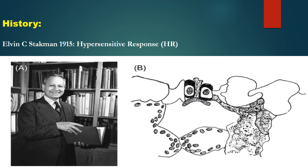The hypersensitive response or HR was first discovered in plants by Alvin S. Deckman in 1915 while working on cereal rust. He observed that those varieties which show HR are the resistant ones, and those varieties which are unable to show HR are the susceptible ones. So there is a correlation between resistance and hypersensitivity. More than 100 years have passed, but still this test is performed in plant pathology to judge the resistance or susceptibility of a plant.